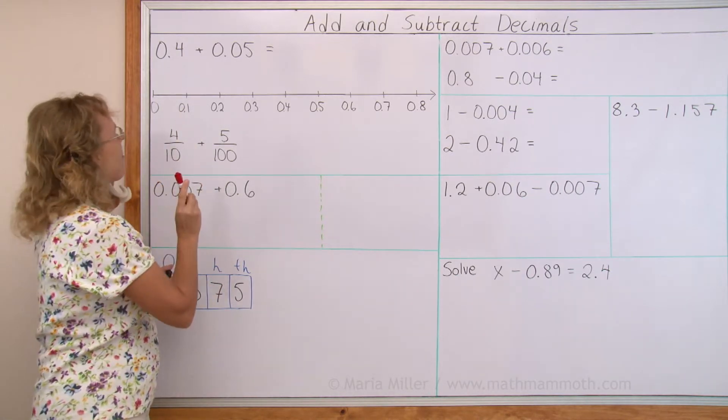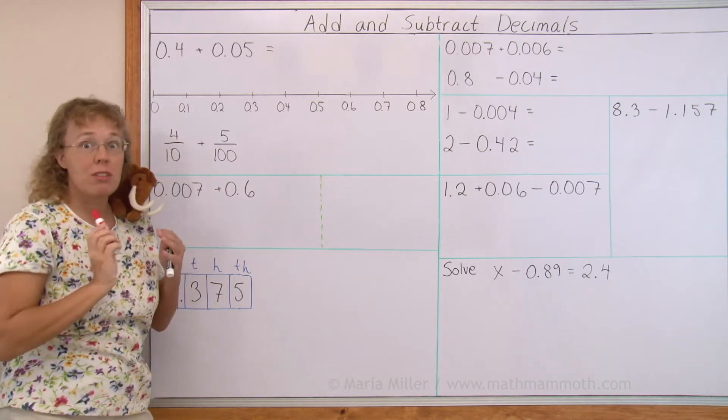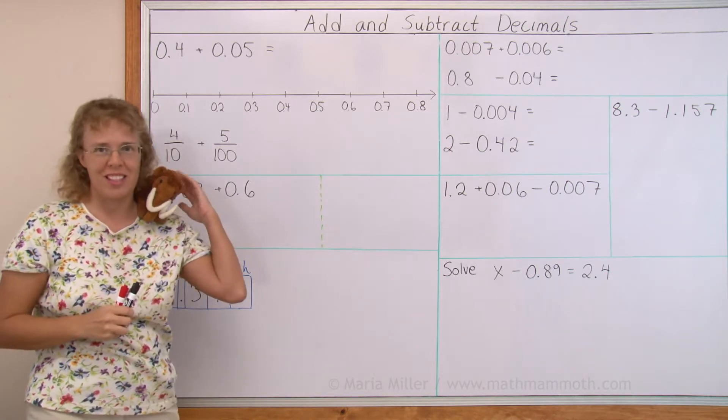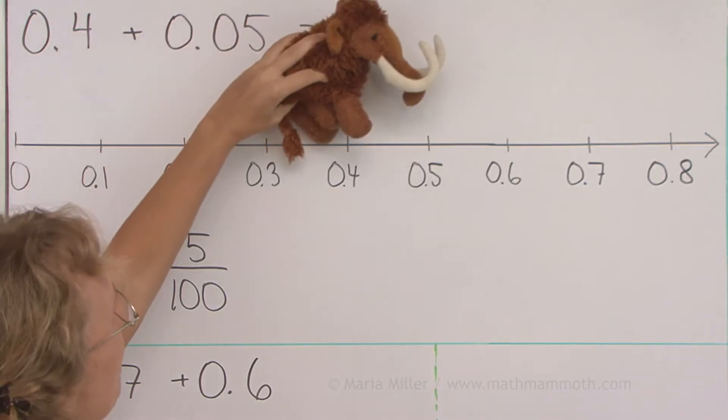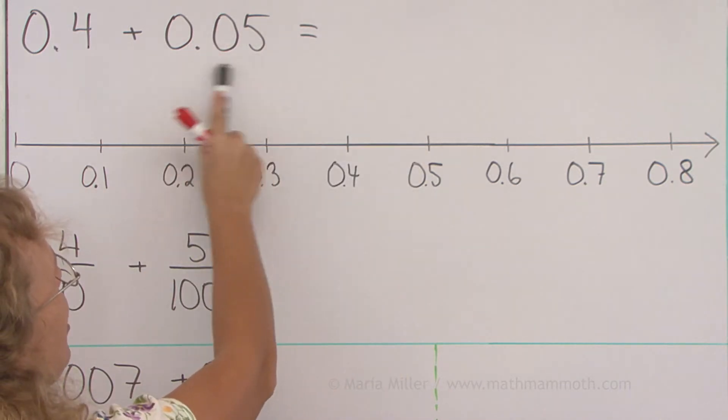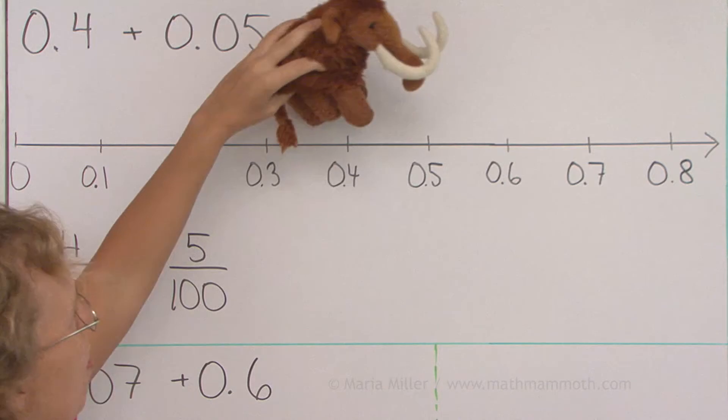Think of it this way: 0.4 or 4 tenths, let's jump on the number line. You remember Mathi loves jumping on the number line. If Mathi jumps first to 0.4, then he has to make another jump that is this long, 5 hundredths long. Where is he going to jump?